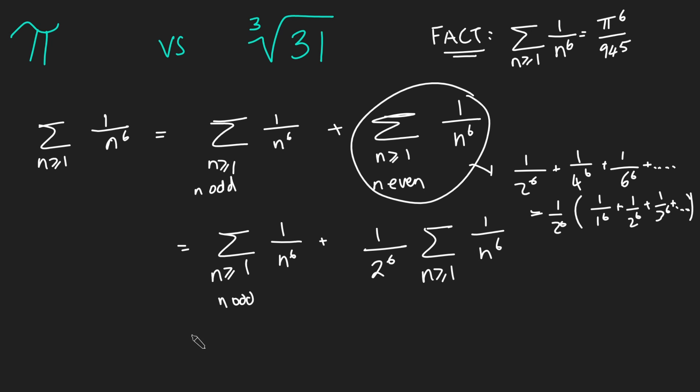And now this is just the same as the sum from n is at least 1 of n odd of 1 over n to the 6 plus 1 over 2 to the 6 times this thing here. But this thing we're going to use our fact is just pi to the 6 over 945.